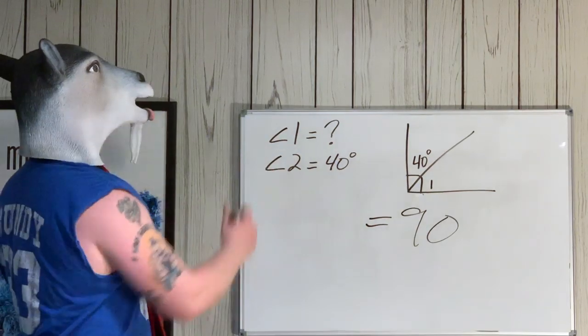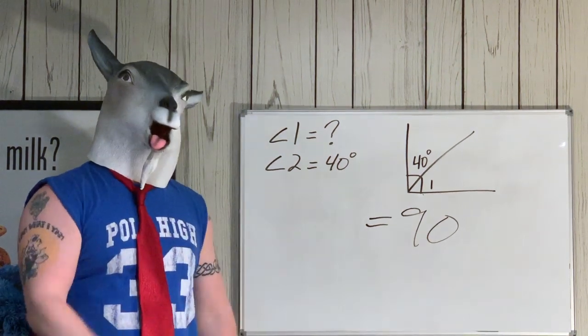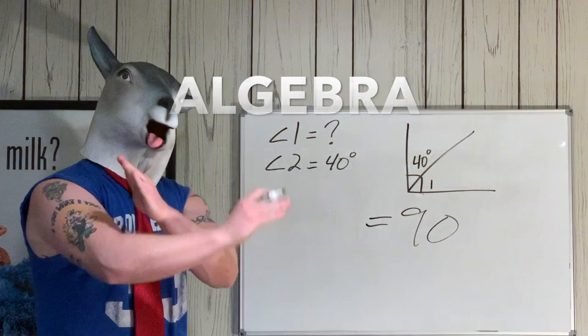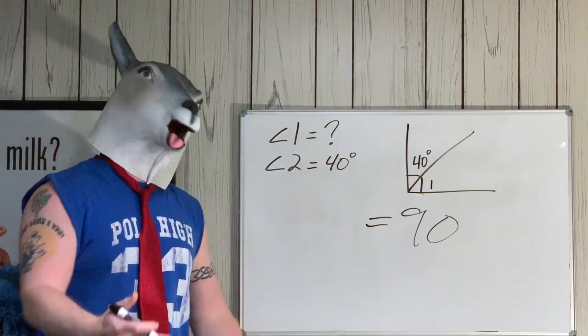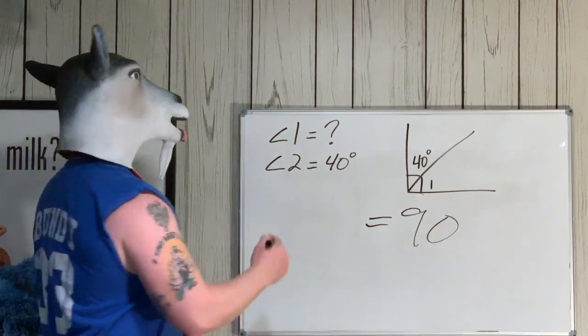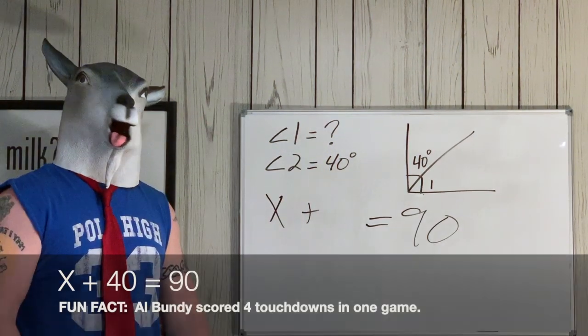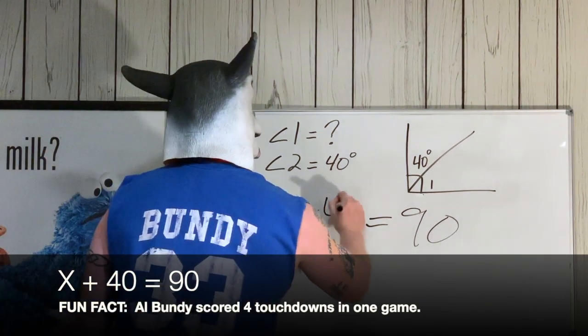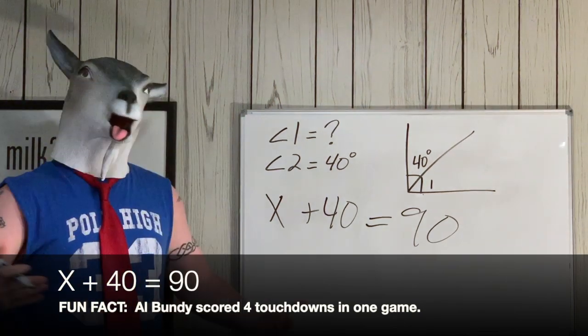So we need to find out what angle one is. Now you already know, when you don't know something, you're just gonna use X. Every time you don't know something in math, you just use X. You can use a different letter if you want, but I always go X man, it's just easy that way. So now we got X plus what's the one we already know they told us? It's 40. X plus 40 equals 90. So some number plus 40 is going to equal 90.